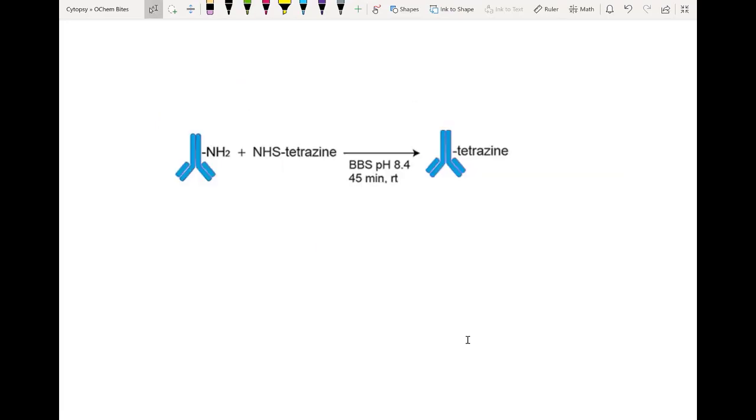The first step is to use the amines on lysines within the antibody to react with NHS tetrazine. NHS amine chemistry is high yield and can be done simply in borate buffered saline at pH 8.4 within 45 minutes to an hour at room temperature.